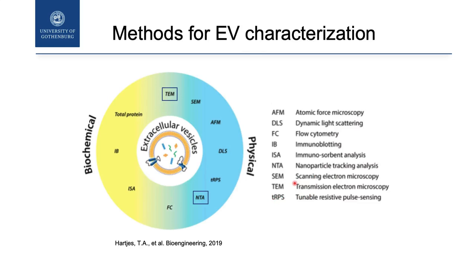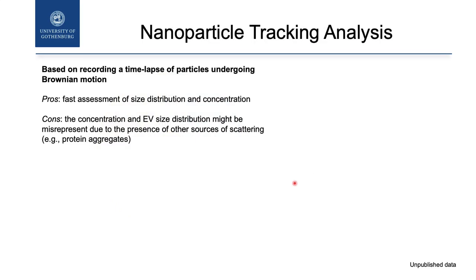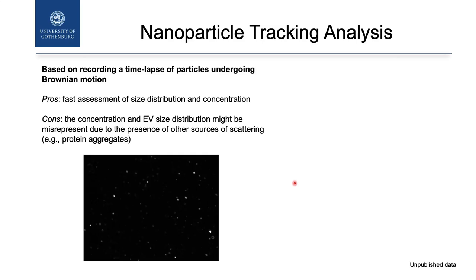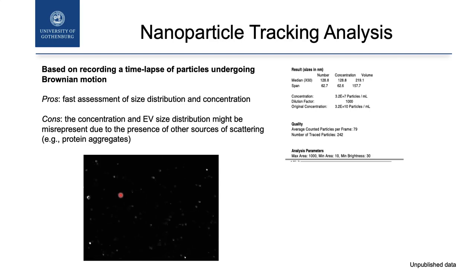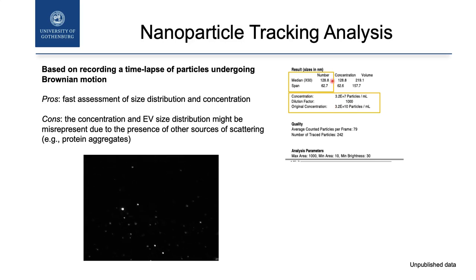Now let's go to physical methods to characterize vesicles. I will tell you a few tips about nanoparticle tracking analysis and then say something about transmission electron microscopy. Nanoparticle tracking analysis is a machine based on the Brownian motion of the vesicles and it's able to tell you the concentration of the particles. The problem is that the machine is not able to distinguish real particles from aggregates. But it's really well used because it's easy to use. With NTA you get the concentration of your particles per ml, as well as the median size.